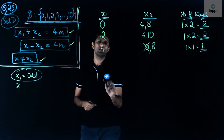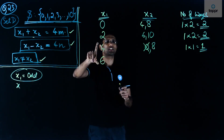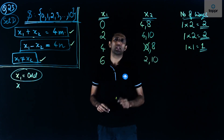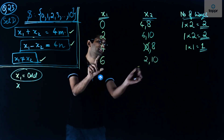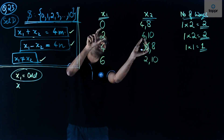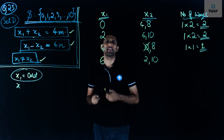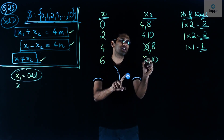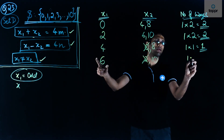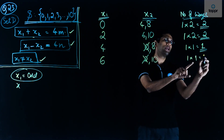Next, x1 = 6. The possible values of x2 are 2 or 10. The pair (2, 6) was already considered when x1 = 2 and x2 = 6, so we discount that. The only new case is x2 = 10, giving us 1 × 1 = 1 way.